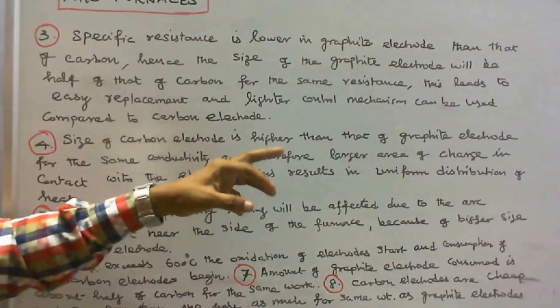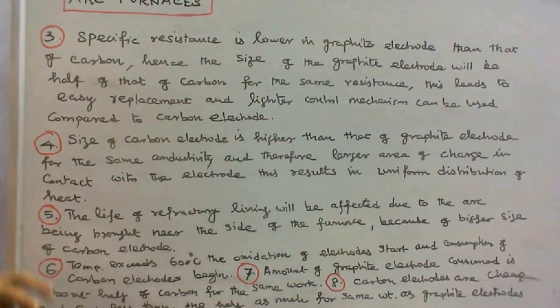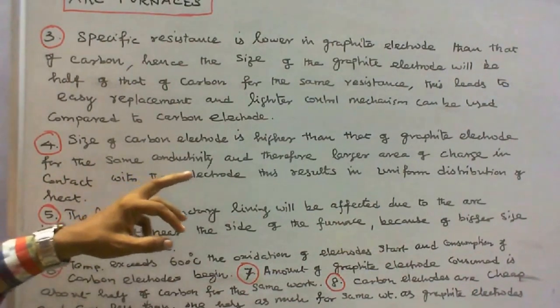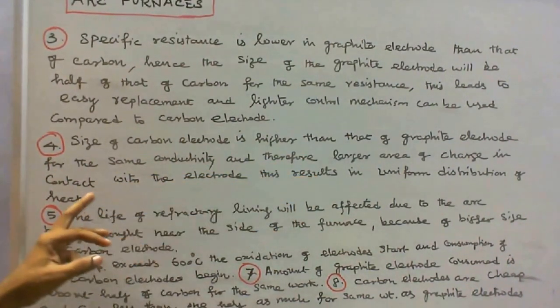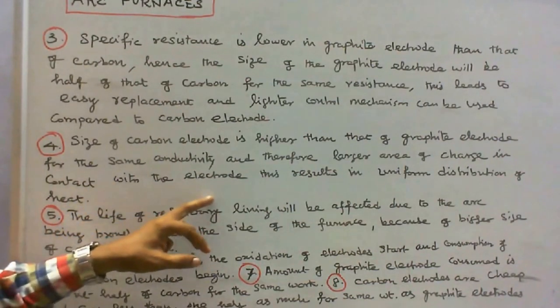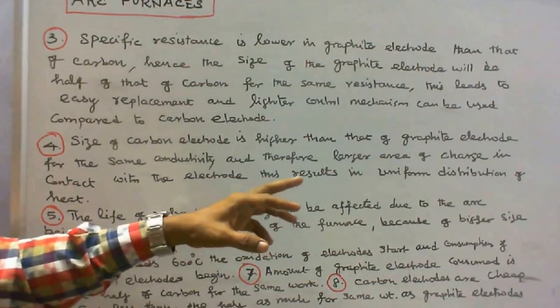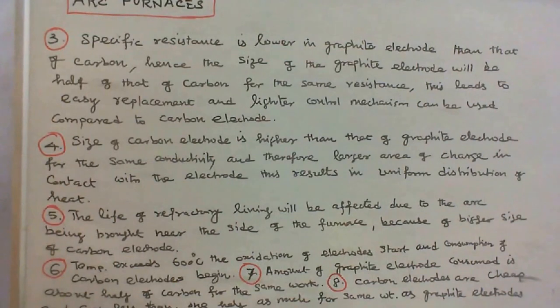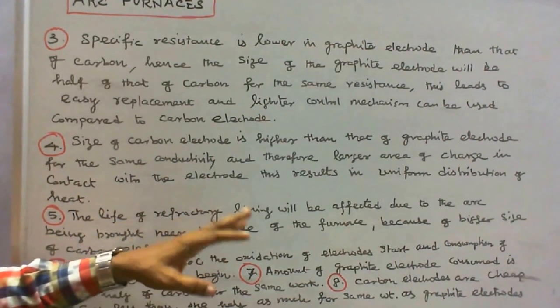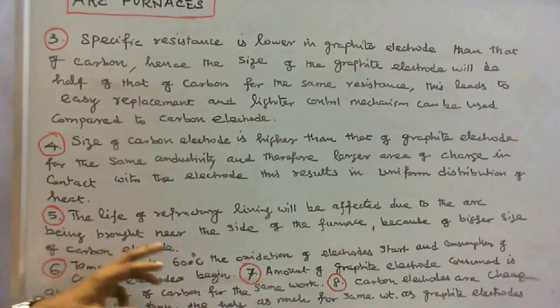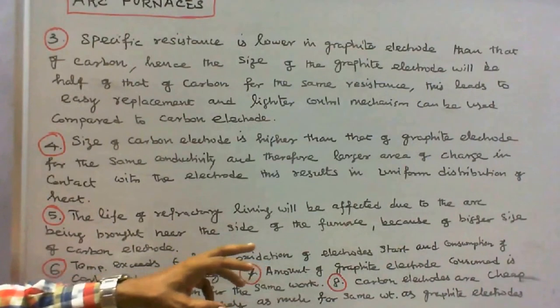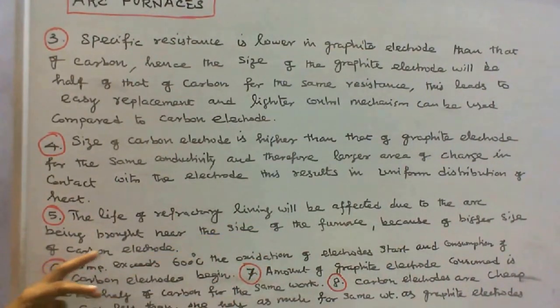Number four: size of carbon electrode is higher than that of graphite electrode for the same conductivity, and therefore larger area of charge in contact with the electrode. This results in uniform distribution of heat. Number five: the life of refractory lining will be affected due to the arc being brought near the side of the furnace because of bigger size of carbon electrode.